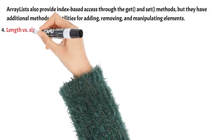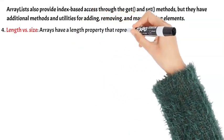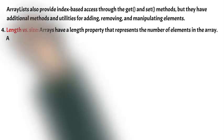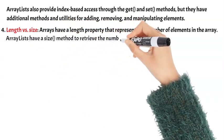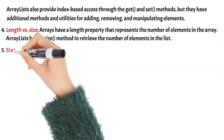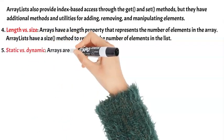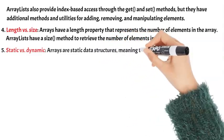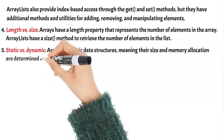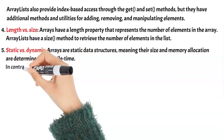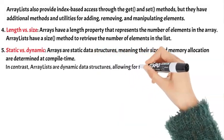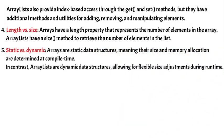Difference 4: Length vs Size — Arrays have a length property that represents the number of elements in the array. ArrayLists have a size method to retrieve the number of elements in the list. Difference 5: Static vs Dynamic — Arrays are static data structures, meaning their size and memory allocation are determined at compile time. In contrast, ArrayLists are dynamic data structures, allowing for flexible size adjustments during runtime.